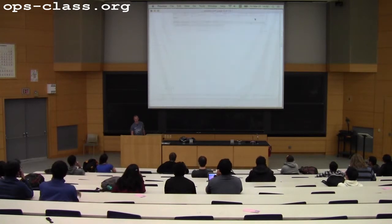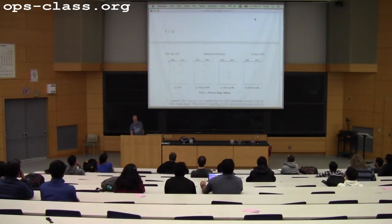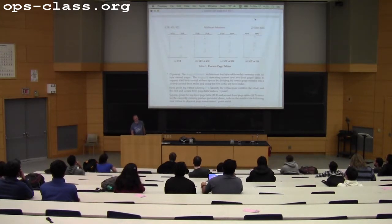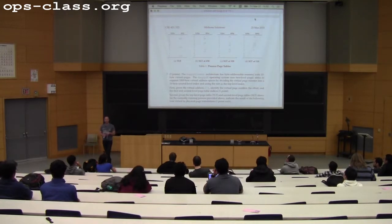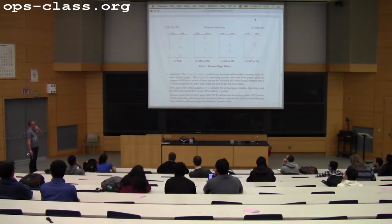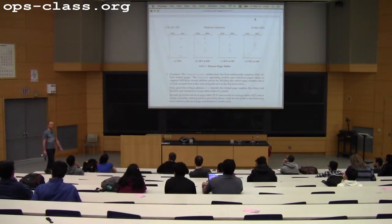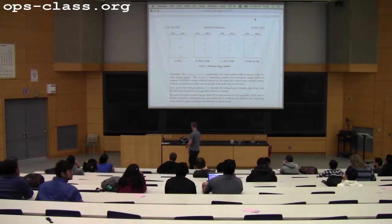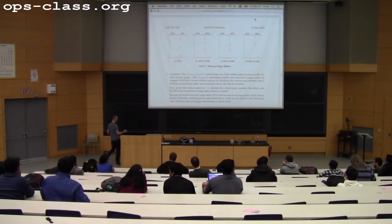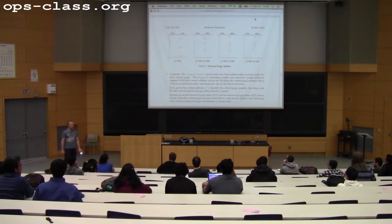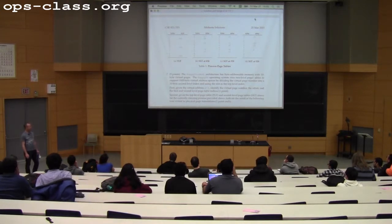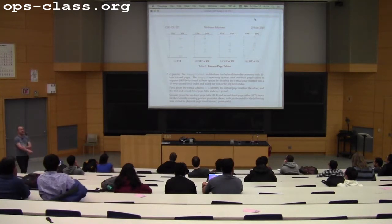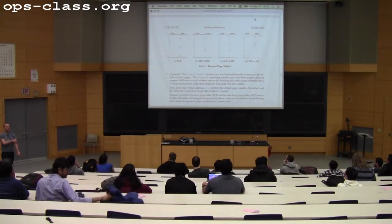So the short answer questions—let's start from the most straightforward and work backwards. The process page tables question: you were provided with three page tables. These are ten-byte pages, and the Happy OS operating system uses two-level page tables. It's a thousand-byte virtual address space, dividing the virtual address into a virtual page number and two indices into each table. The first question was: given virtual address 273, identify the virtual page number, offset, and first and second level page table indices.